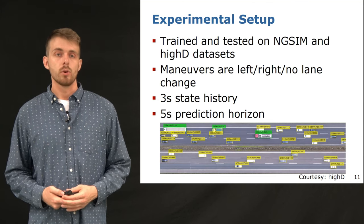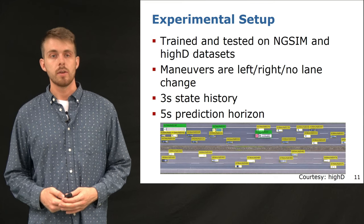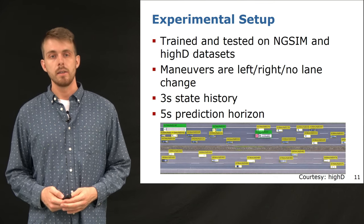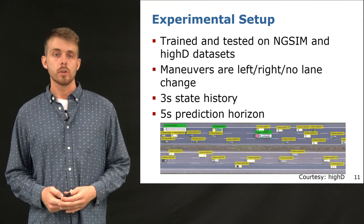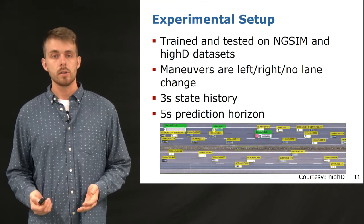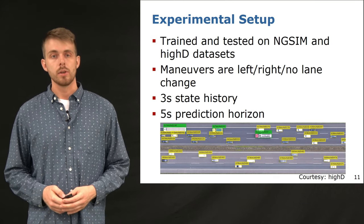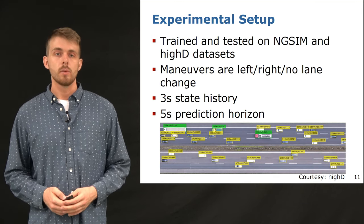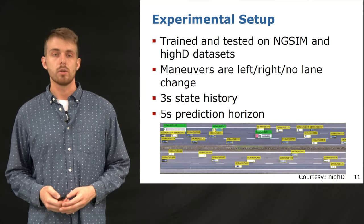We demonstrate the performance of our approach on two highway datasets. NGSIM was taken on several highways in the US and HID is recorded on German highways. We choose to model the possible maneuvers as left and right lane change as well as straight driving. To compare to other prediction methods, we anticipate the common setting of observing three seconds of past states to predict five seconds of future locations.